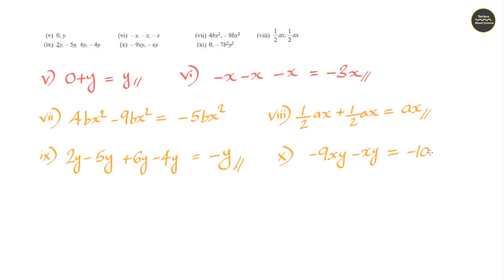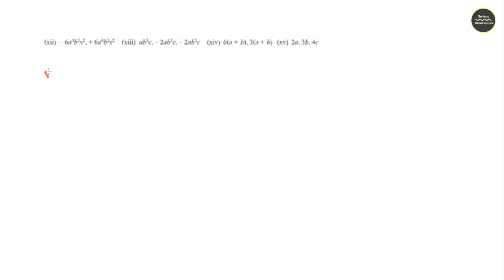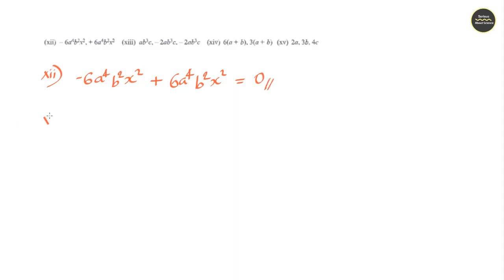Question number 11: 0 minus 7b square y square. Answer would be minus 7b square y square. Question number 12: minus 6a to the power 4 b square x square plus 6a to the power 4 b square x square. These are like terms and they cancel out to be 0. Answer is 0.